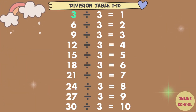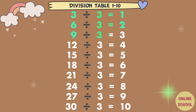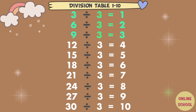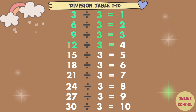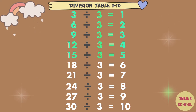3 divided by 3 equals 1. 6 divided by 3 equals 2. 9 divided by 3 equals 3. 12 divided by 3 equals 4. 15 divided by 3 equals 5.